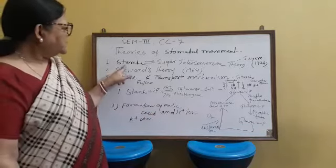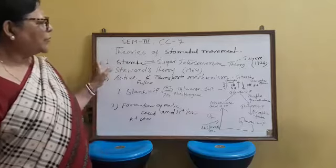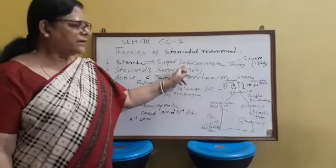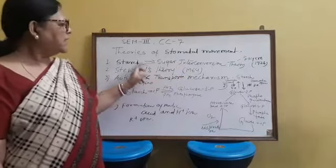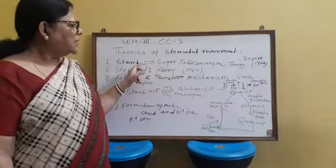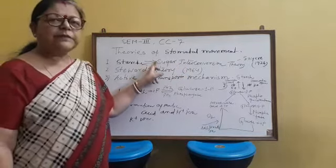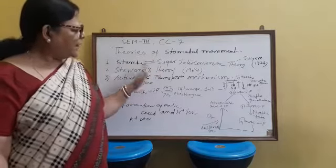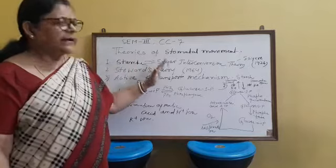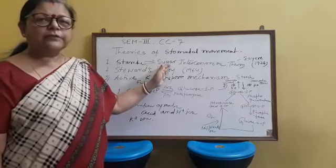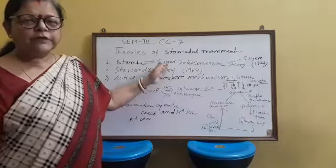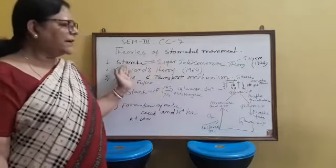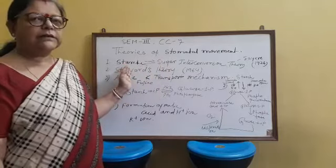The first theory, which is very famous, is the starch and sugar interconversion theory. This theory is by Lloyd. It states that during opening, starch is converted into glucose inside the guard cells. And when the stomata closes, the sugar is converted back into starch.